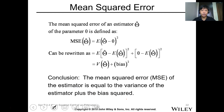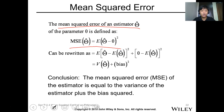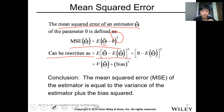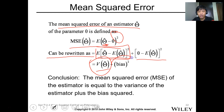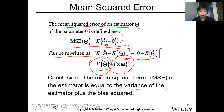Now, the mean square error. If you want to determine the mean square error of an estimator, this is equal to the expected value of theta-hat minus theta, quantity squared. You can rewrite this as the expected value of theta-hat minus E(theta-hat), quantity squared, plus theta minus E(theta-hat), quantity squared, where the first expression is the variance of the estimator and the second is the bias squared. So MSE equals variance of the estimator plus the bias squared.